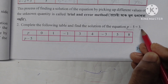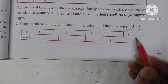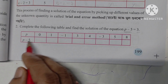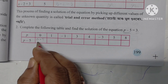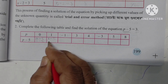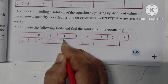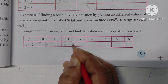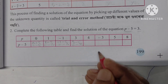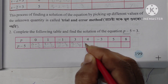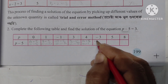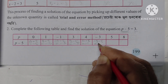Left-hand side is p minus 5, right-hand side is 3. For p equal to 0: 0 minus 5 equals minus 5. For p equal to 1: 1 minus 5 equals minus 4. For p equal to minus 1: minus 1 minus 5 equals minus 6. For p equal to 3: 3 minus 5 equals minus 2. For p equal to 4: 4 minus 5 equals minus 1. For p equal to minus 3: minus 3 minus 5 equals minus 8.